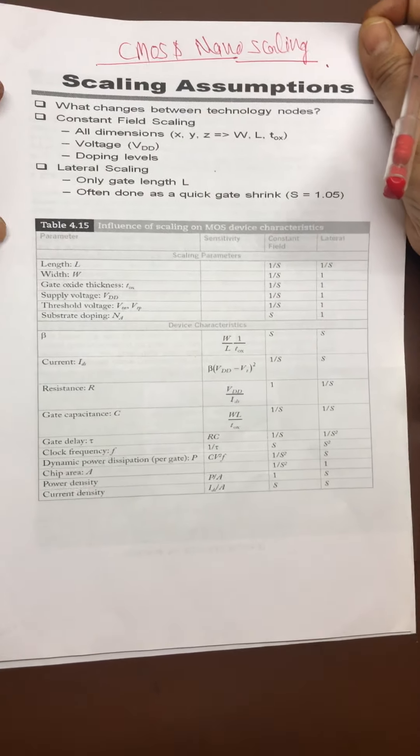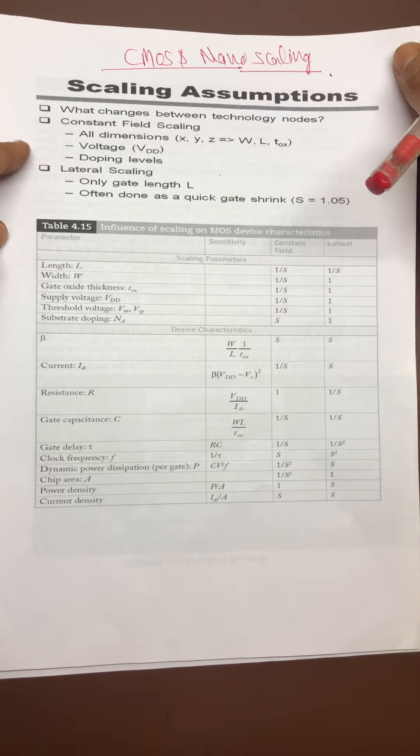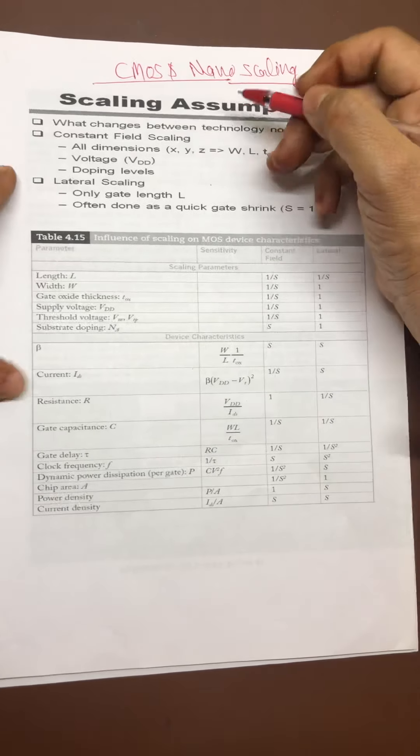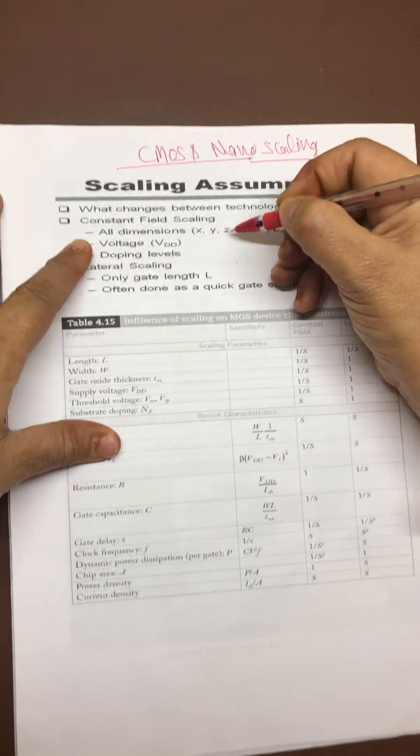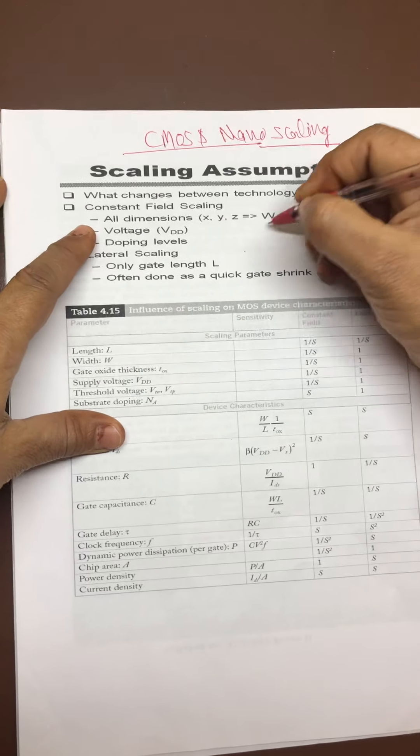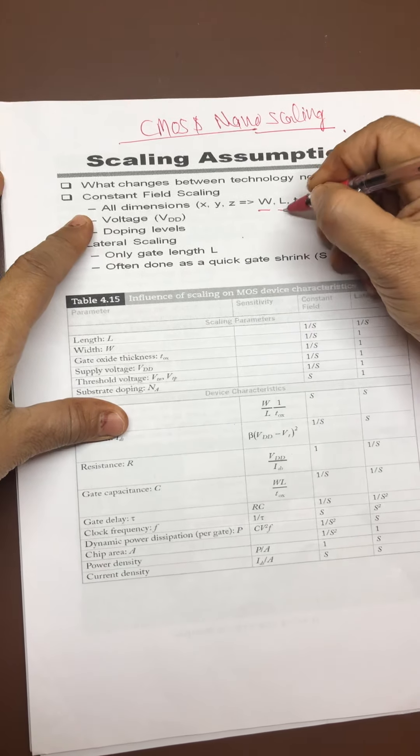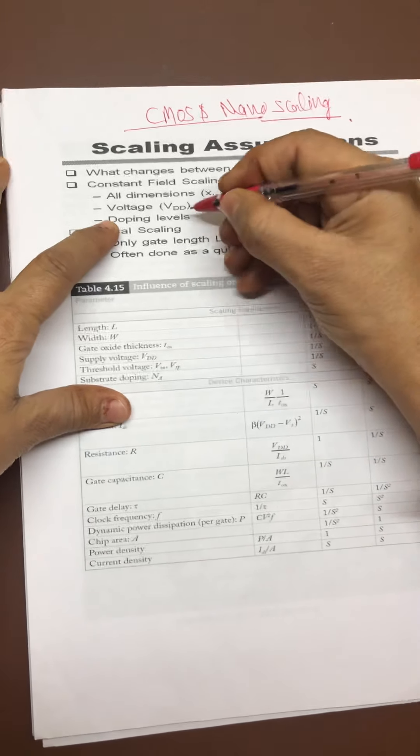First is dimensions: W is width, L is length, T_OX is thickness, voltage V_DD is supply, and doping level. These are called constant field scaling.